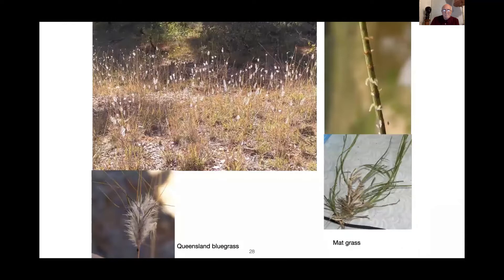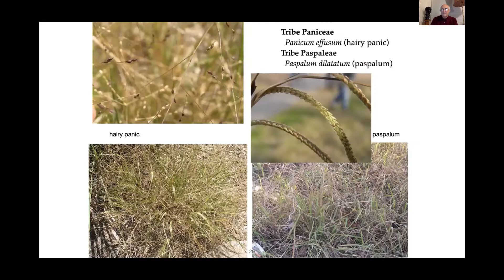Some others: Kentucky bluegrass is on the left, and mat grass is on the right. Mat grass likes very wet conditions and you often find it in swampy type areas. Kentucky bluegrass is not uncommon around here.